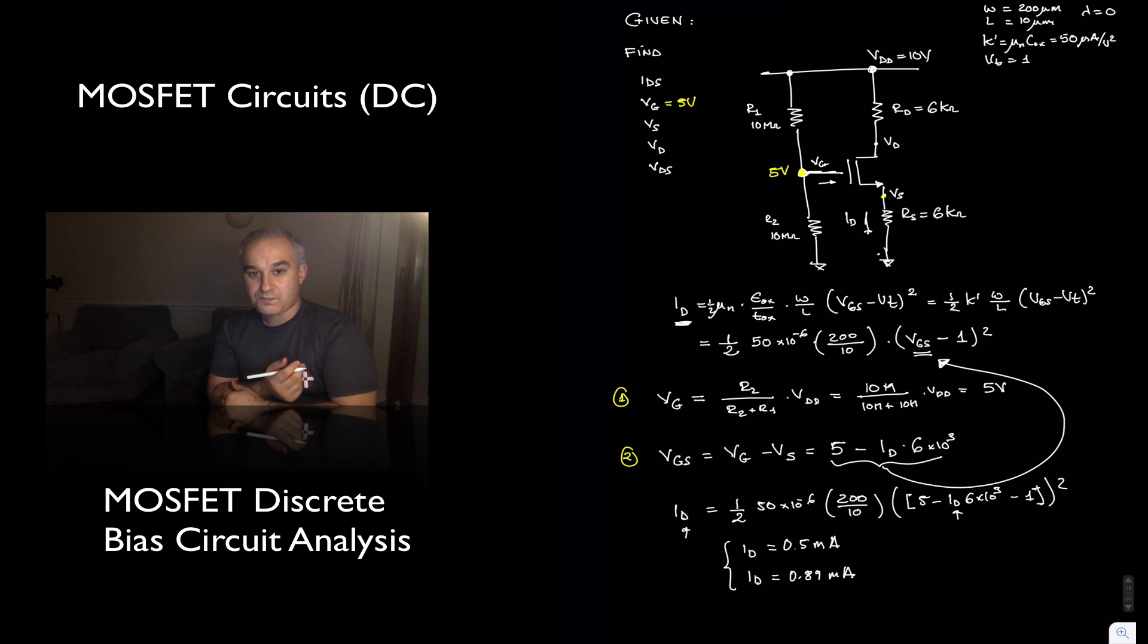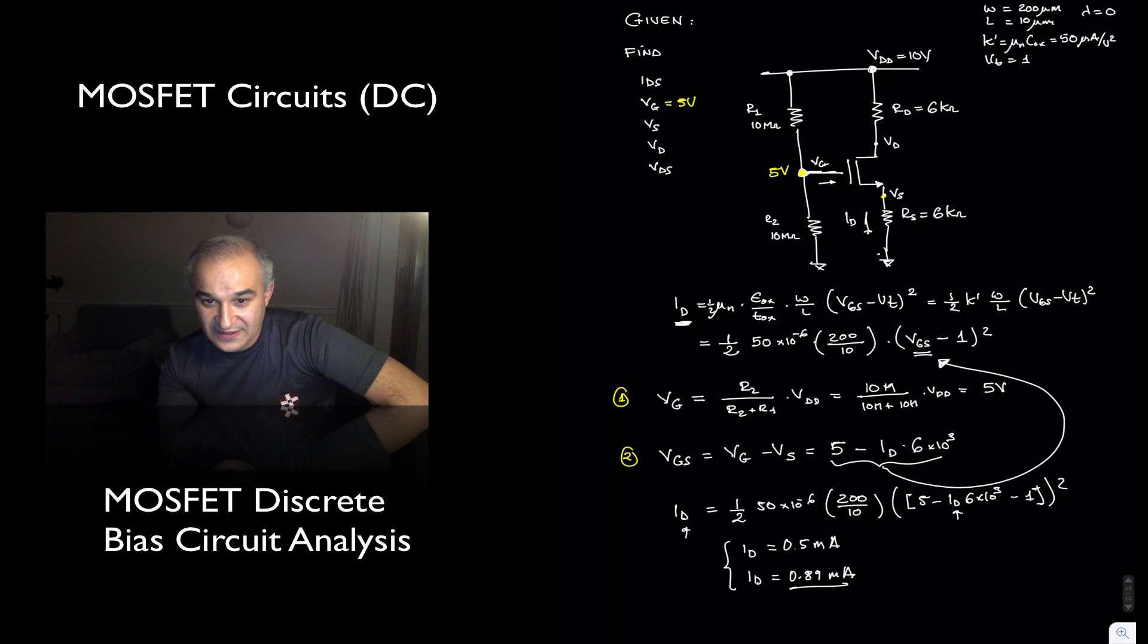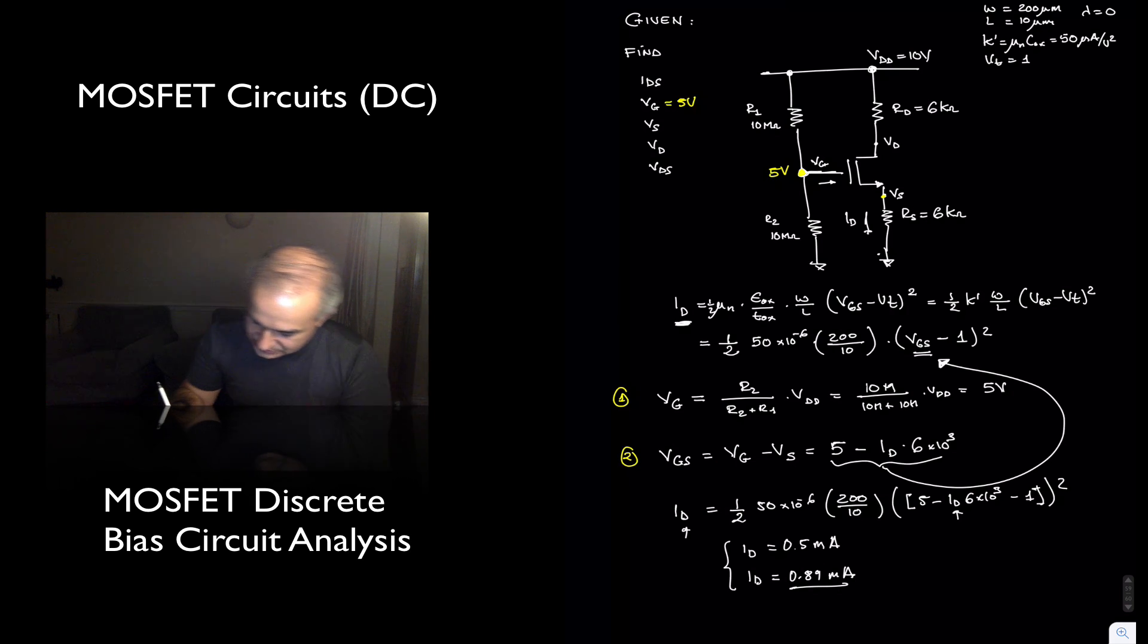And one of them, actually, you have to discard, it does not work. Typically, it's going to be the larger one. When you multiply the 0.89 milliamps times the 6k, you get that the value at the source is 5.34, which is higher than the value at the gate. You will get no current at all. So this is not right.